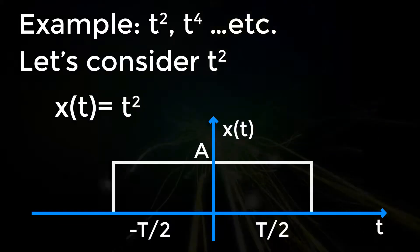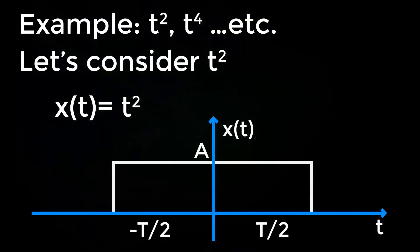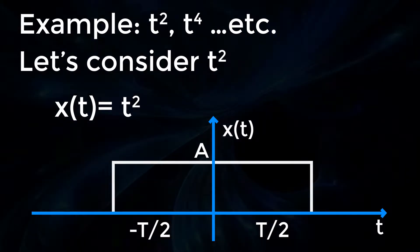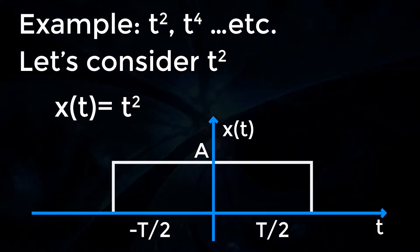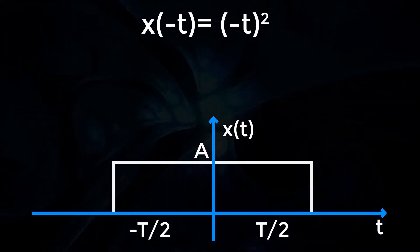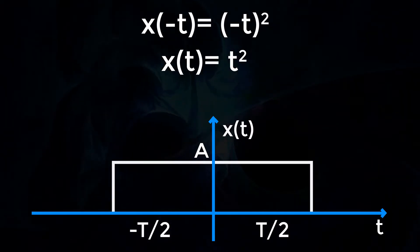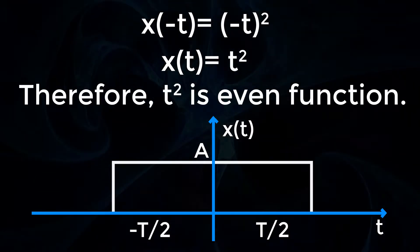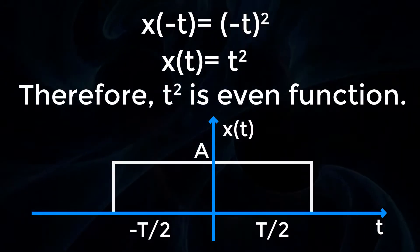Example: t², t⁴, and so on. Let's consider t². x(t) = t². x(-t) = (-t)² = t² = x(t). Therefore, t² is an even function.